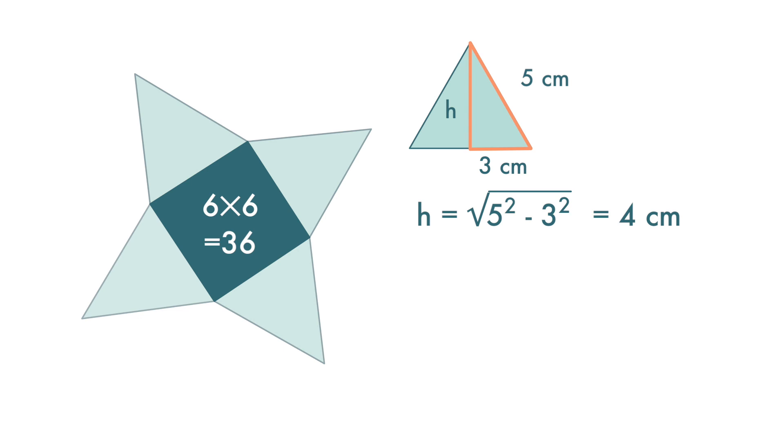Now we want to find the area of the triangle. Area of triangle is 1 over 2 times base times height. The base is 6 centimeters—note that it is 6, not 3 centimeters. The height is 4 centimeters, and the area is 12 centimeter square.